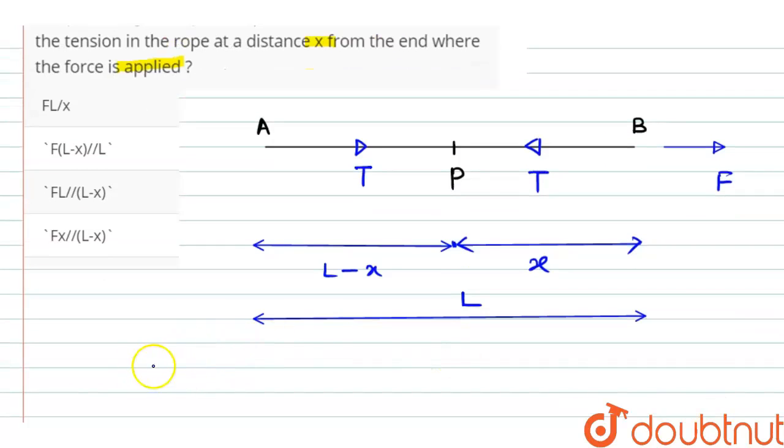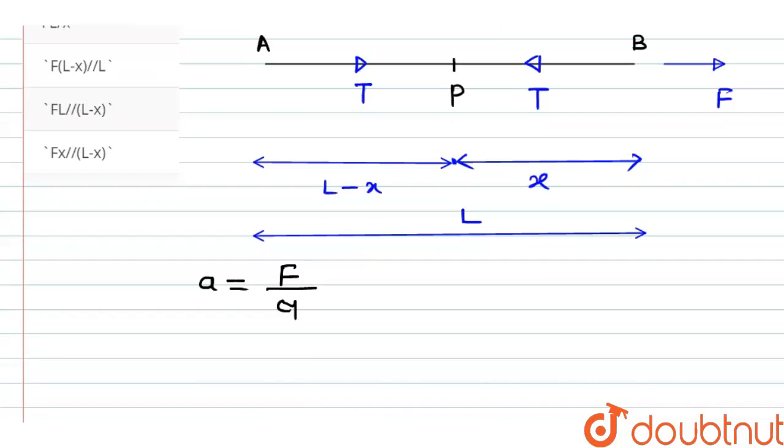Then the acceleration on the system will be equal to applied force divided by mass. So A equals F divided by M. And mass per unit length for the string is indicated by lambda, and it is capital M by capital L.